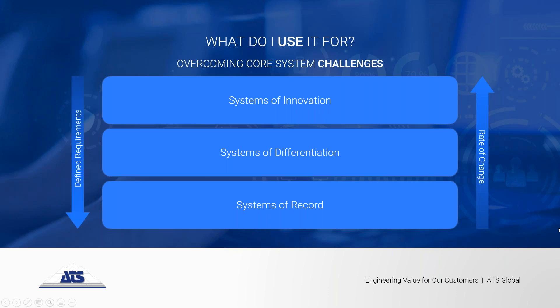What do I use it for? This is one of the harder questions to answer with low code, because a lot of providers will say it can do anything and everything. In the manufacturing world, the Gartner pace-layered architecture model adds some clarity. They've divided systems into systems of record, systems of differentiation, and systems of innovation.